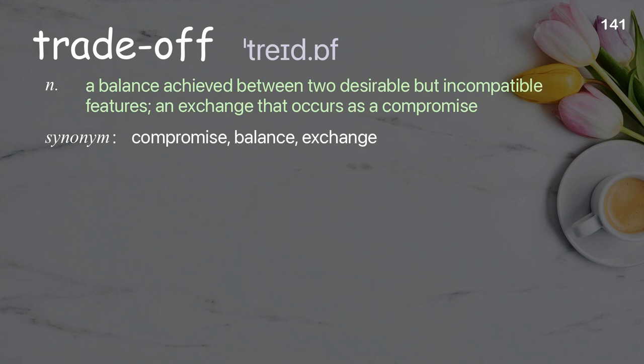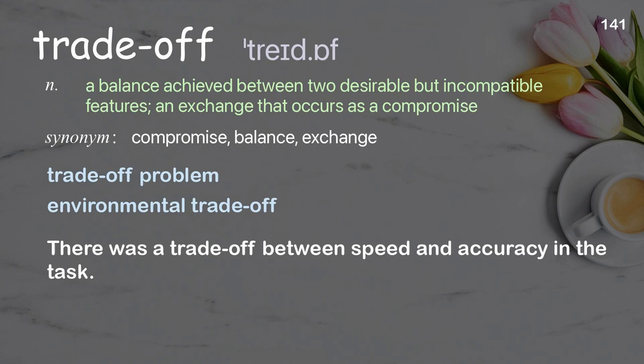Trade-off: a balance achieved between two desirable but incompatible features; an exchange that occurs as a compromise. Examples: trade-off problem; environmental trade-off. There was a trade-off between speed and accuracy in the task.